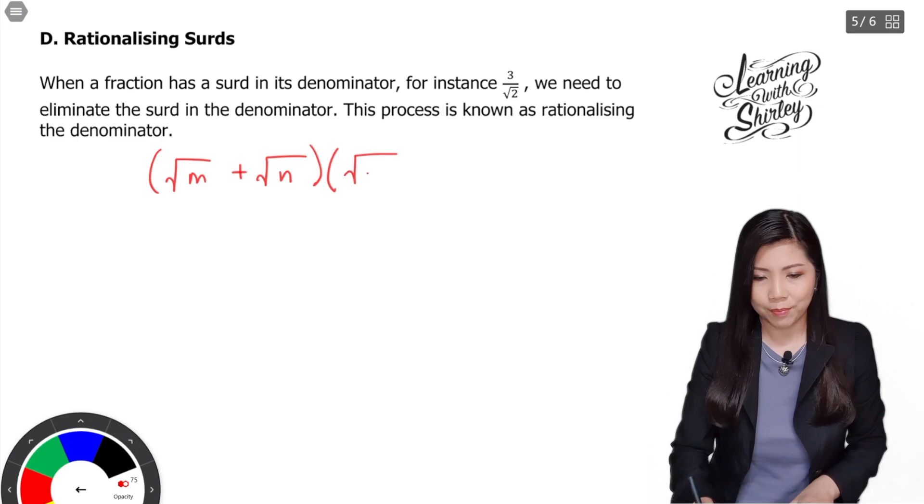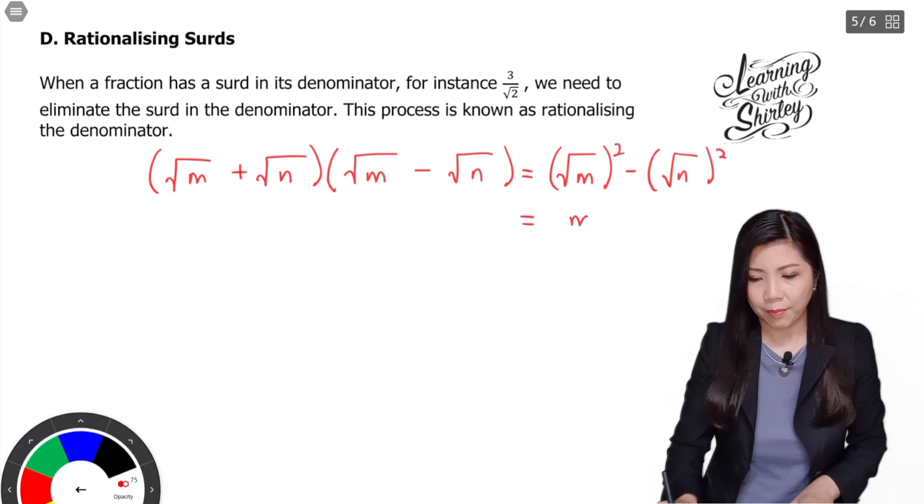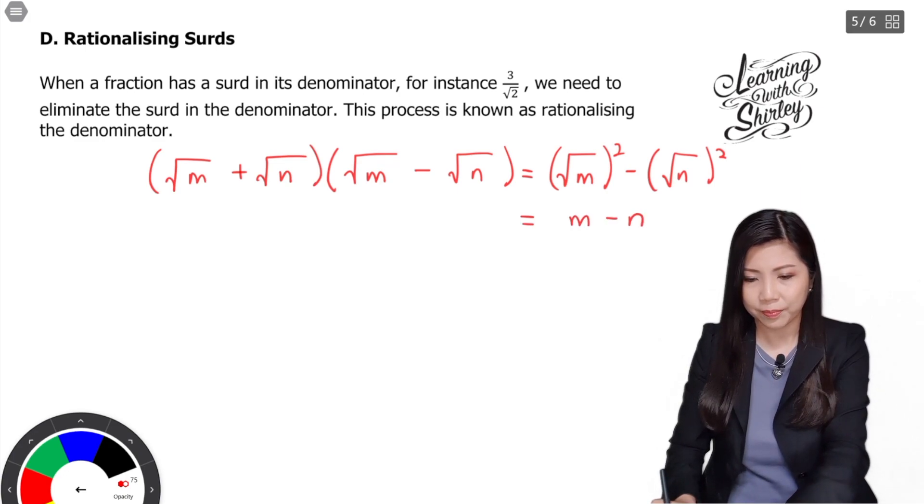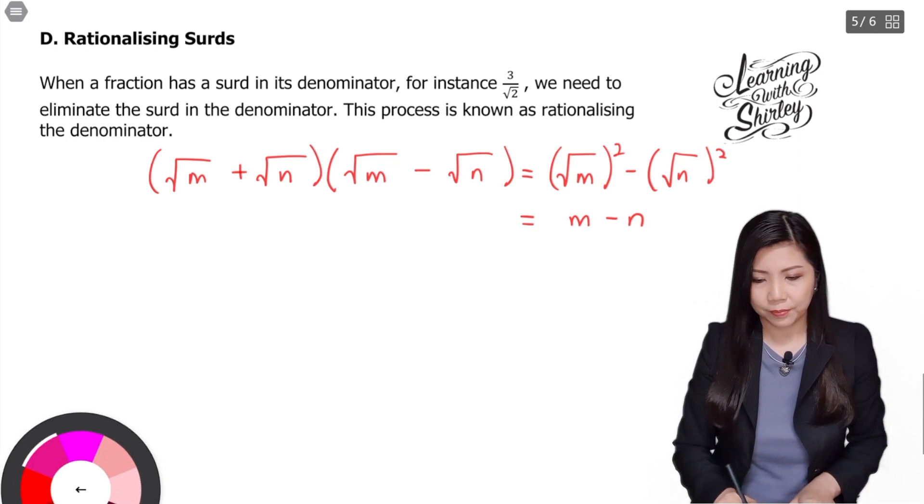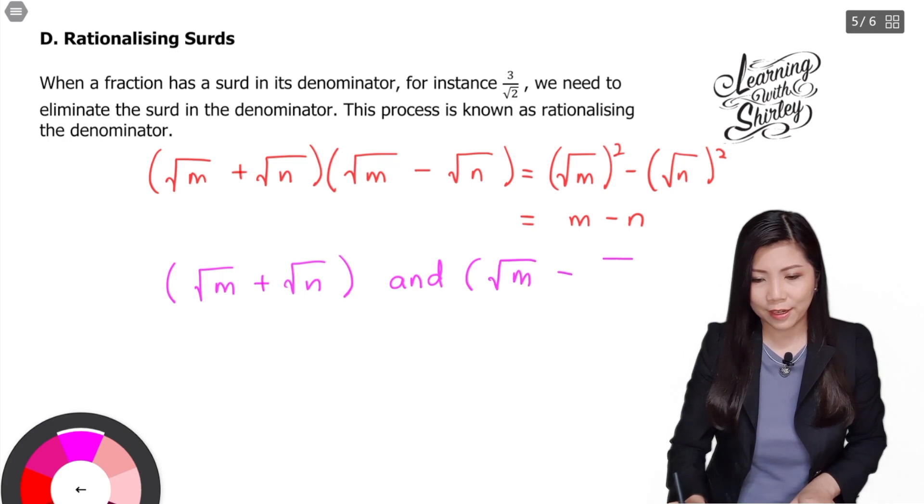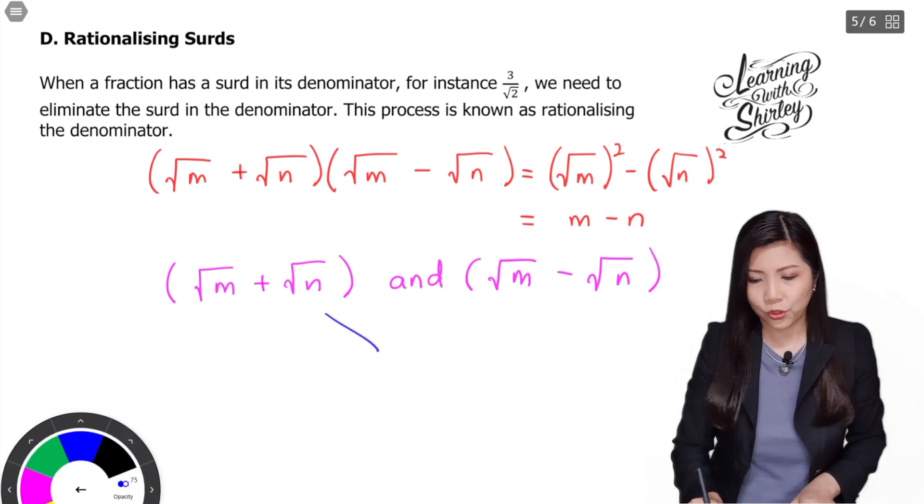Surd M plus surd N in bracket, multiplied with surd M minus surd N in bracket, is equal to surd M whole square minus surd N whole square, and it's equal to M minus N.